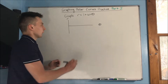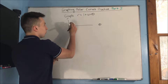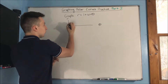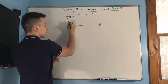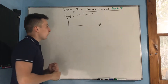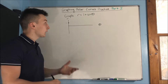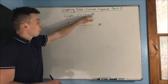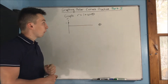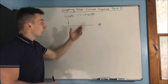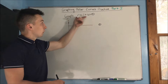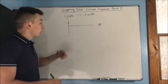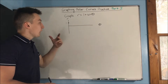So what's our first point going to be on this graph? It's going to be just 1 comma 0. When we plug in 0 for theta, we're just going to get r equal to 1. So there's our first point.